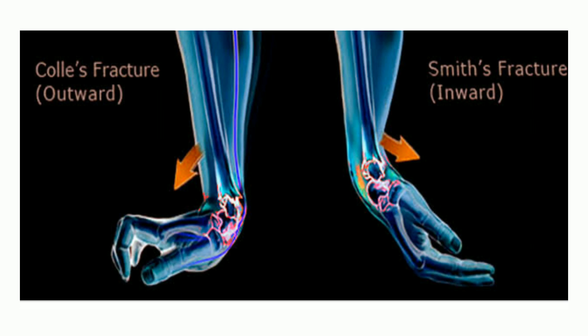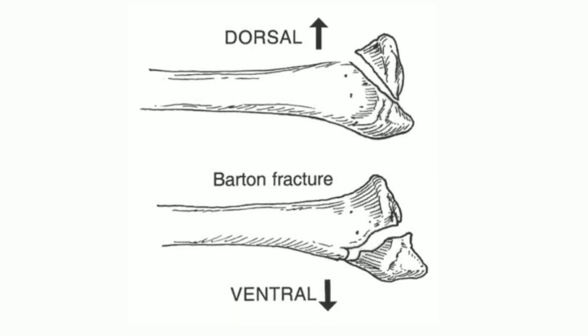Barton's fracture is an intraarticular fracture of the distal radius. The fracture extends from the articular surface of the radius to either its anterior or posterior cortex. The small distal fragment gets displaced and carries with it the carpals. Depending upon the displacement, there is a volar Barton's fracture (anterior type) and a dorsal Barton's fracture (posterior type). Treatment is closed manipulation and plaster cast. Open reduction and internal fixation with a plate may be required where closed reduction fails, and may be the primary choice in young adults with significantly displaced fractures.